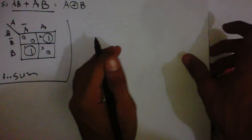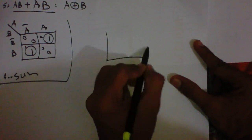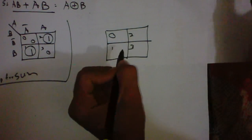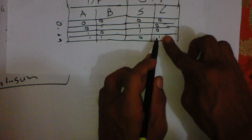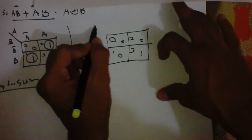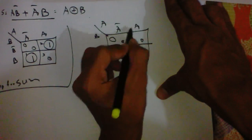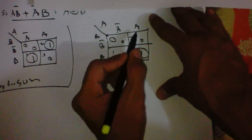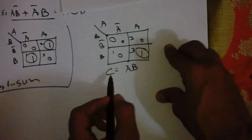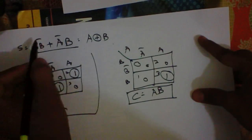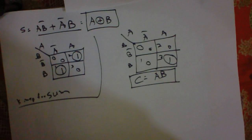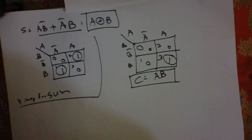Let's see the K-map for carry. This is very simple because we have only one output stage active. For carry, there is only one in the last stage — position three — only there is one active, others are zero. So the equation for carry is C = A·B. So we have two expressions for S and C. From these two expressions, let's design a circuit diagram for the half adder.